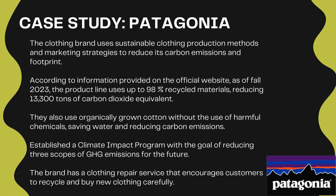Case study: Patagonia. The clothing brand uses sustainable clothing production methods and marketing strategies to reduce its carbon emissions and footprint. According to information provided on the official website, as of Fall 2023, the product line uses up to 98% recycled materials, reducing 13,300 tons of carbon dioxide equivalent. They also use organically grown cotton without the use of harmful chemicals, saving water and reducing carbon emissions. They established a climate impact program with the goal of reducing three scopes of GHG emissions for the future. The brand has a clothing repair service that encourages customers to recycle and buy new clothing carefully.